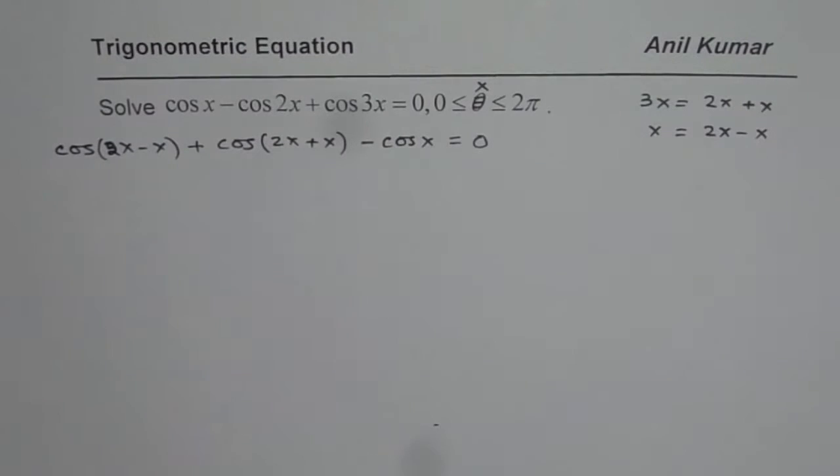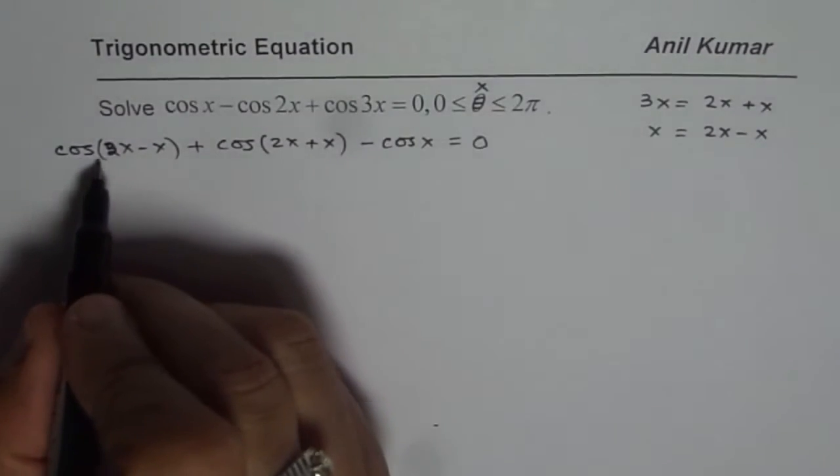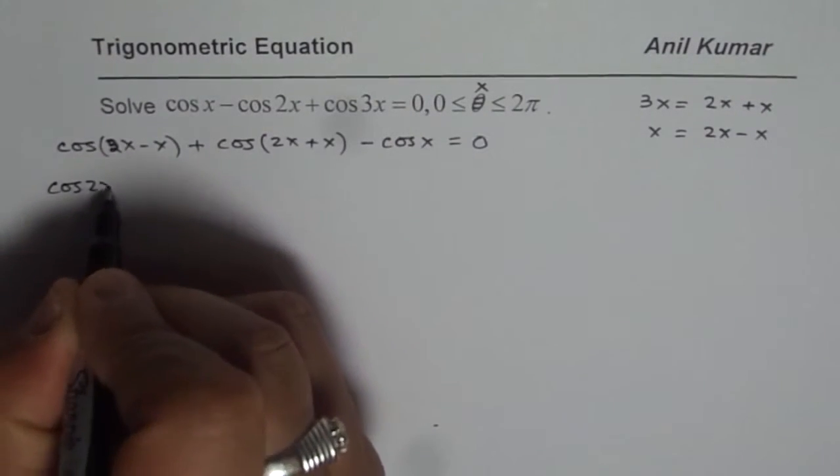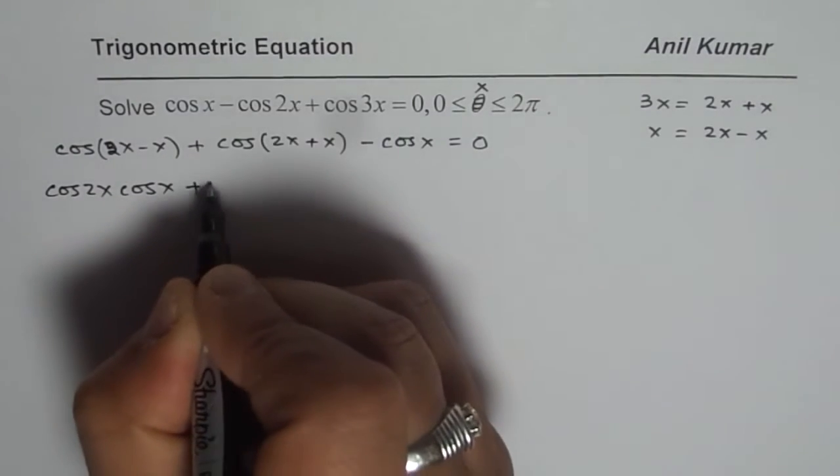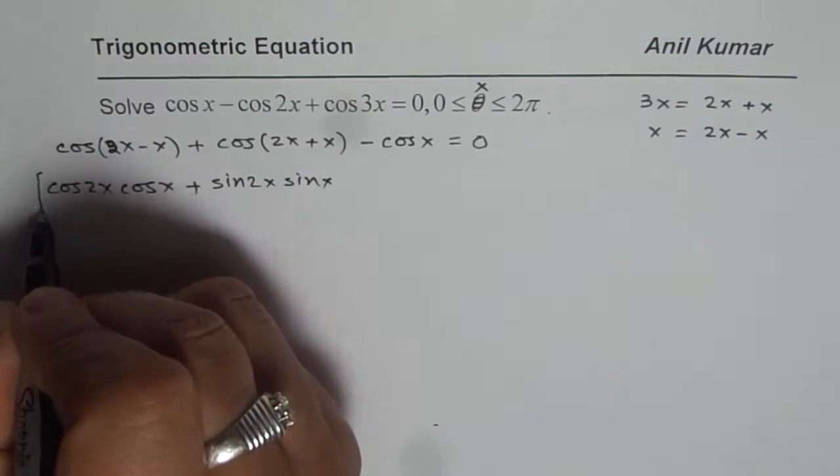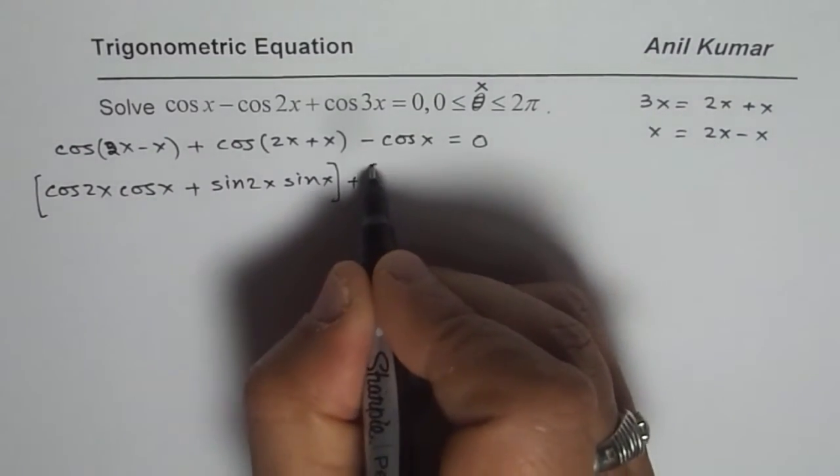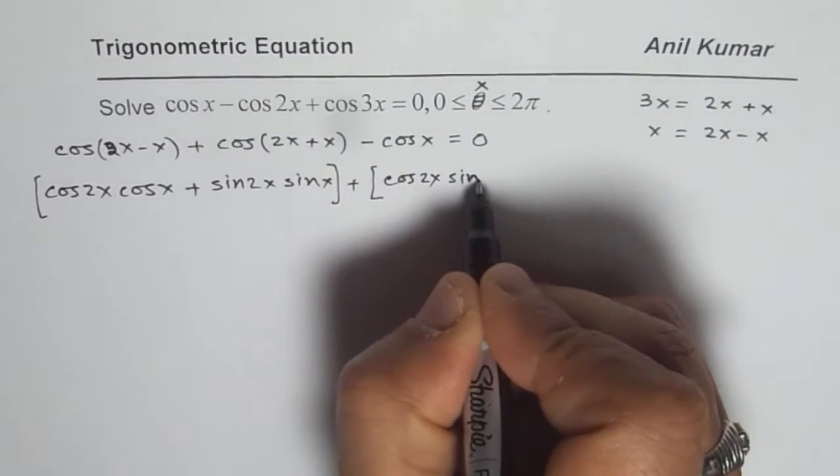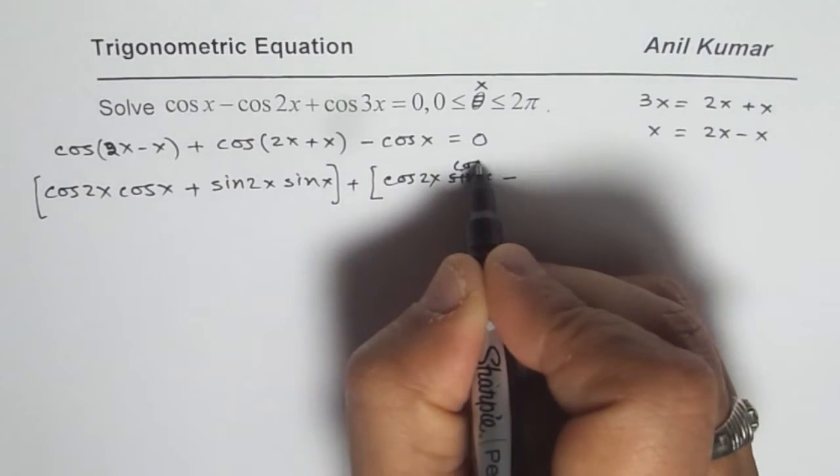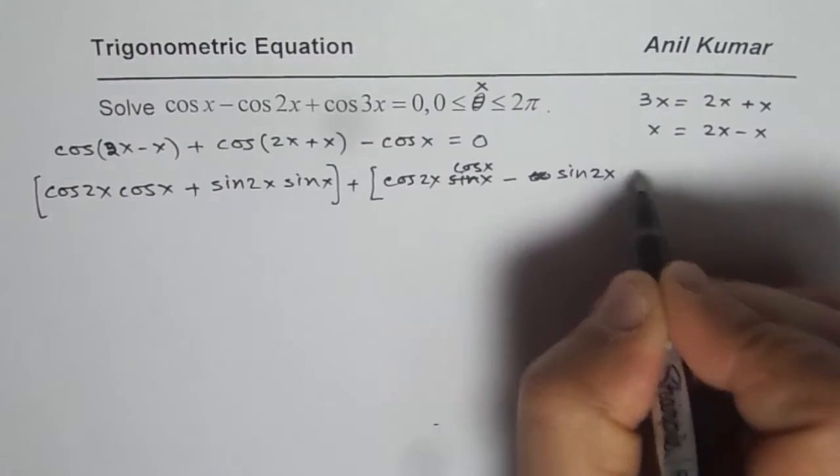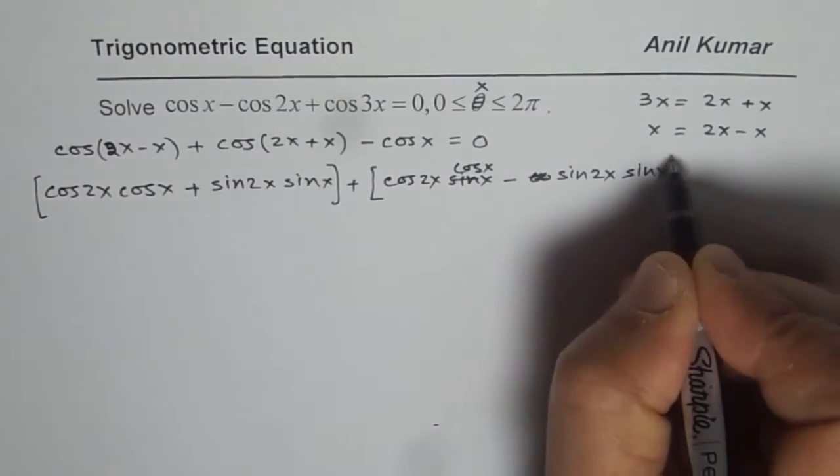This is a very important strategy to solve this equation effectively. This is cos(a - b). We can expand this as cos 2x cos x plus sin 2x sin x. That is the first term and the second term for us is cos 2x sin x minus cos 2x sin x.